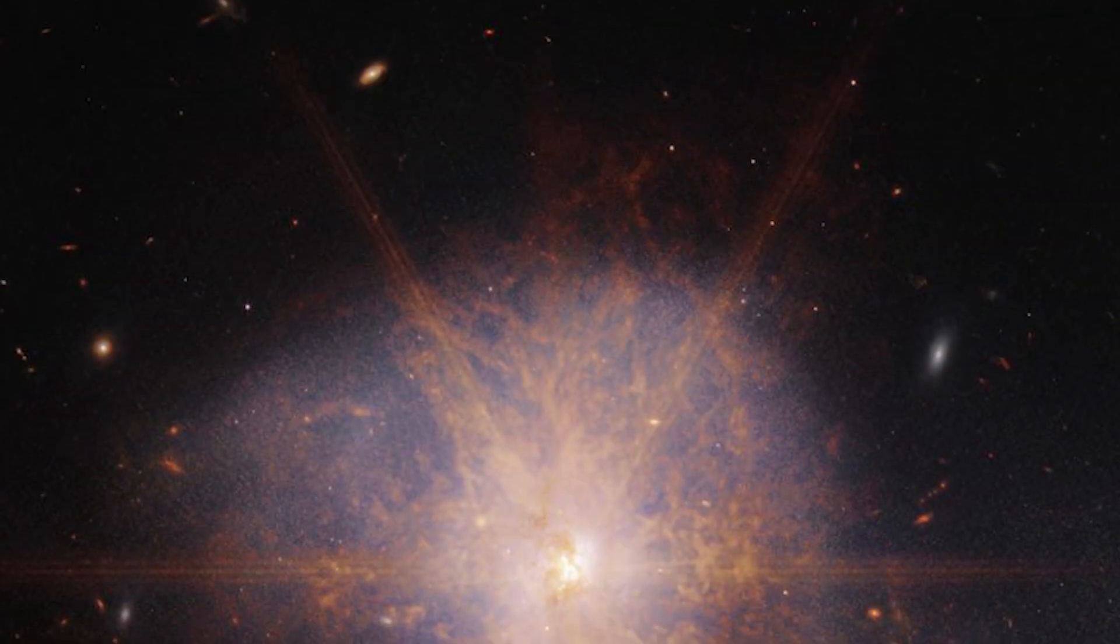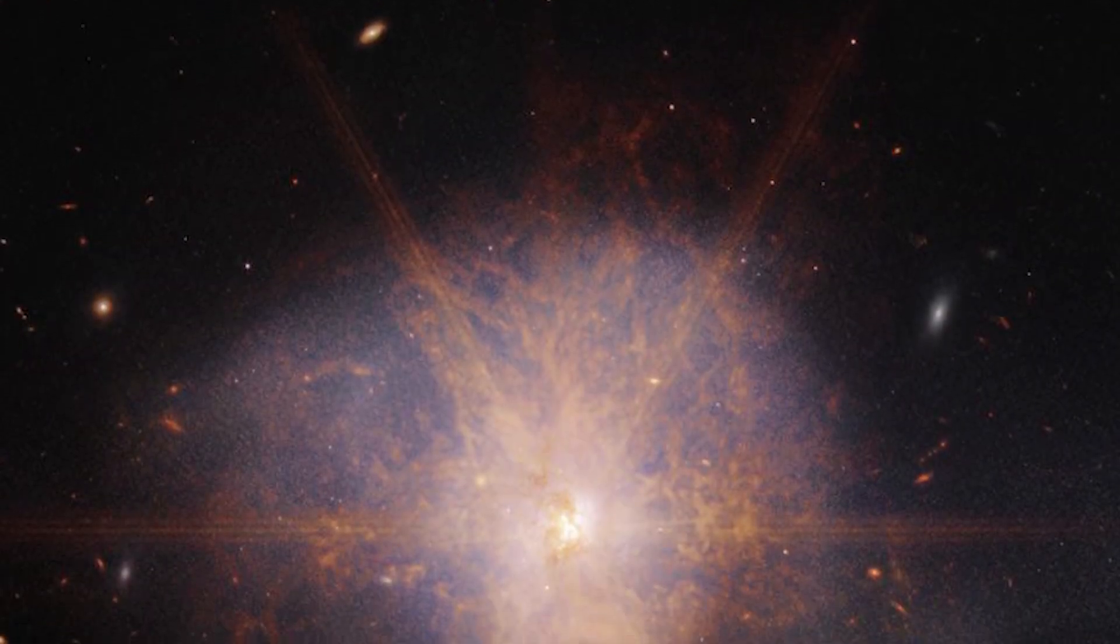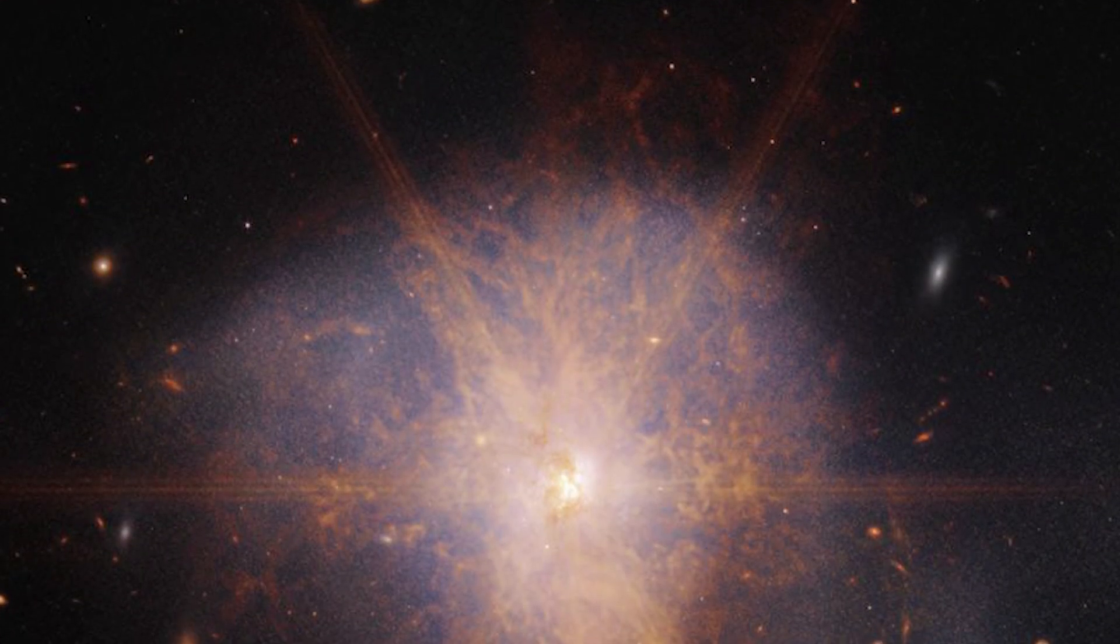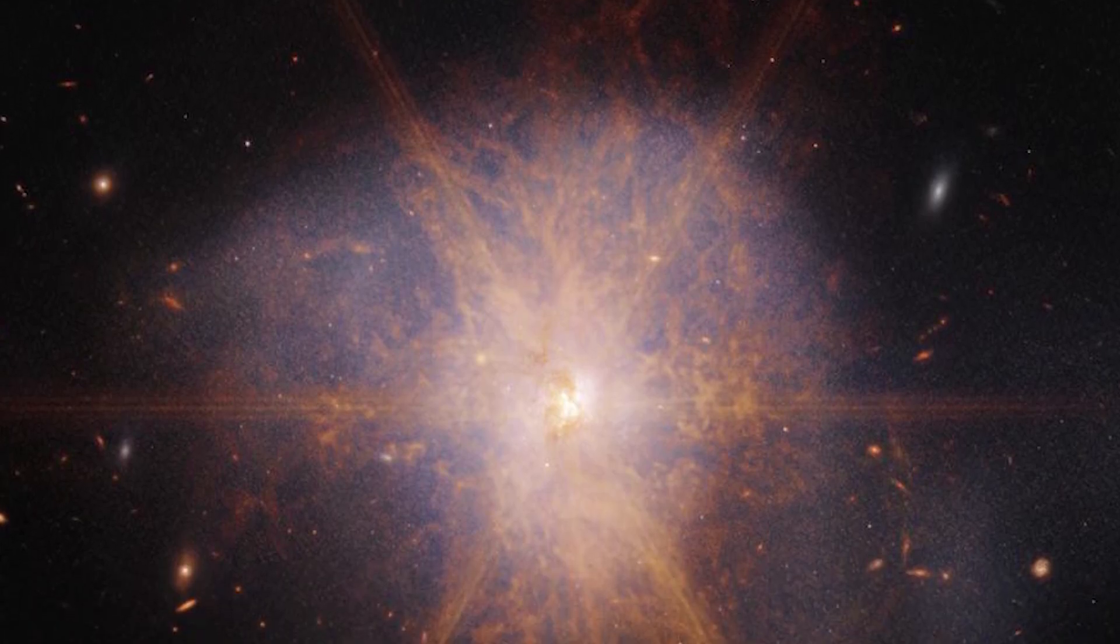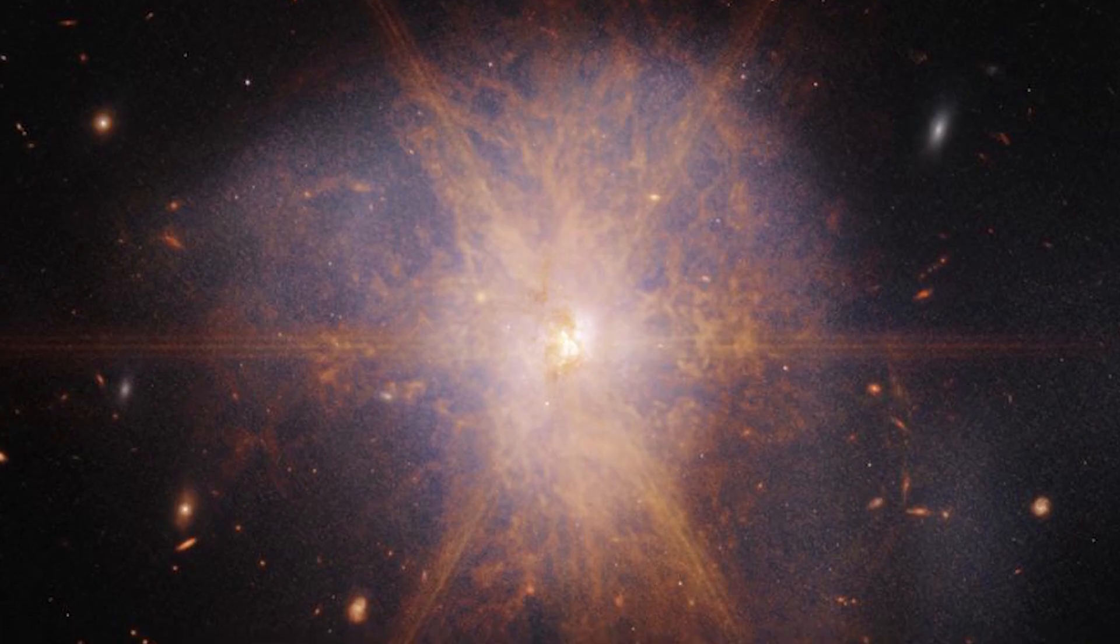The latest views from the James Webb Space Telescope shows an impressive galactic merger of the two galaxies. This image also shows faint tidal tails extending from the outskirts of the merger, indicating the gravitational pull between the two galaxies.